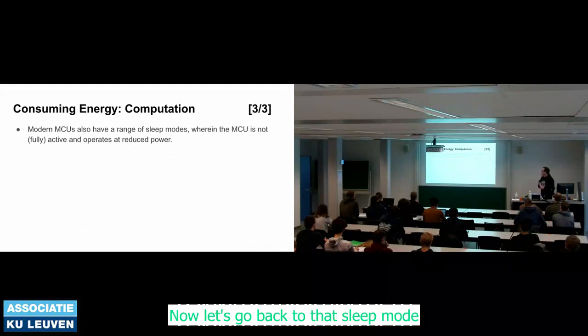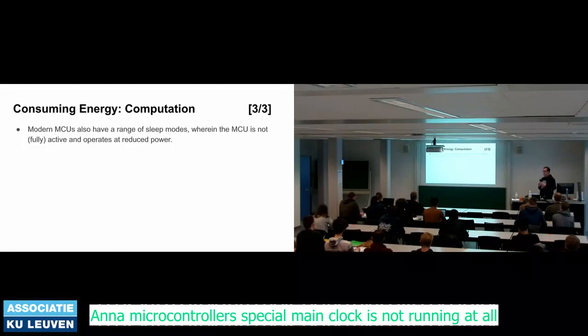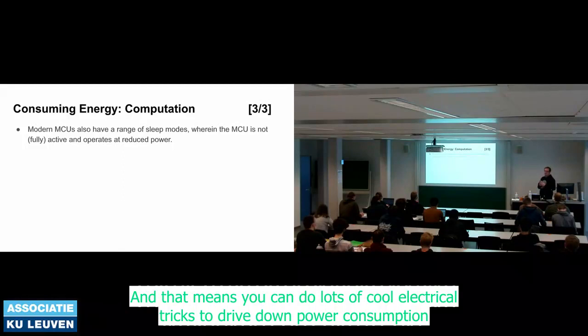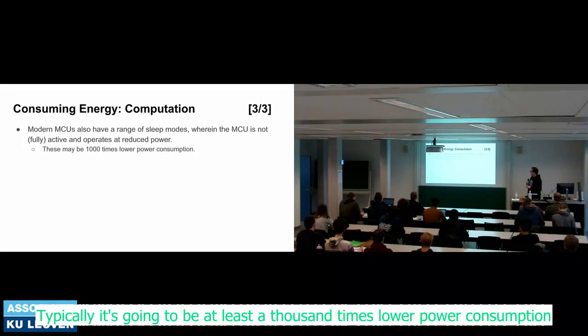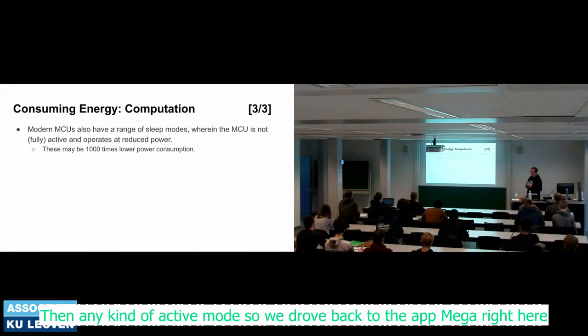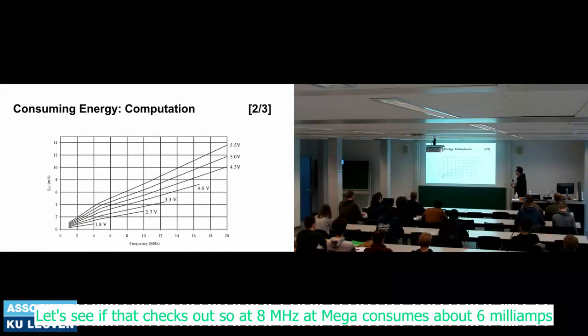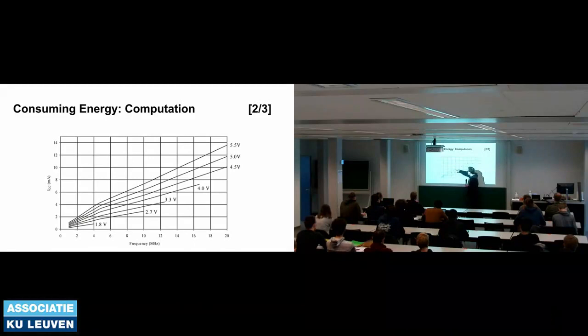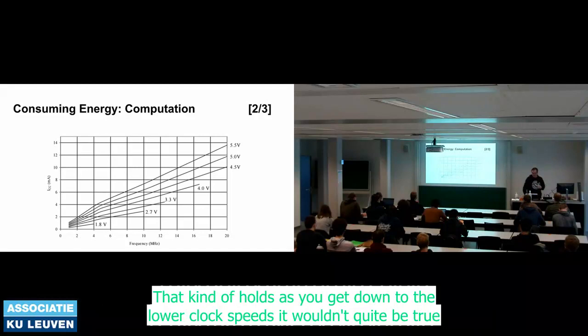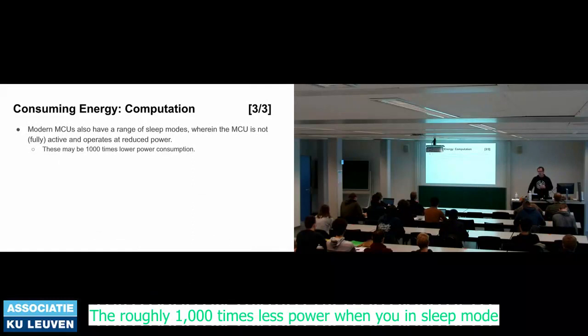In general you should run at the lowest voltage that achieves the clock speed you need — it's more efficient to run at 4 MHz at 1.8V than anything higher. This is typically true for most microcontrollers. Sleep mode is special: the main clock is not running at all, enabling electrical tricks that drive power consumption down to typically at least a thousand times lower than any active mode. An 8 MHz ATmega consumes about 6 mA active and about 6 µA in sleep.